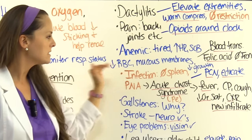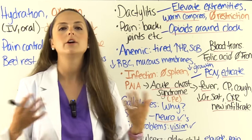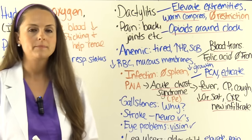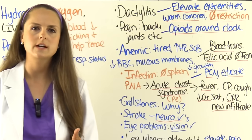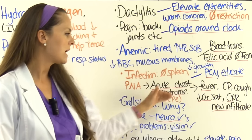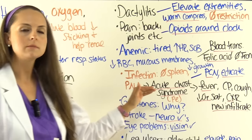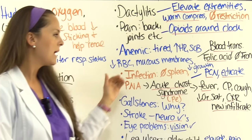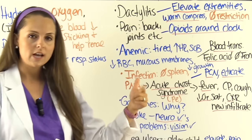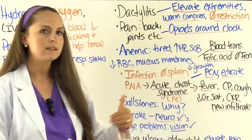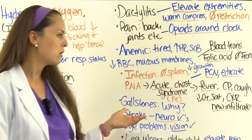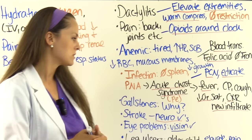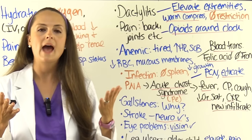The spleen isn't working well, so these patients are at huge risk for infection — it plays a role filtering out foreign invaders. Many can get pneumonia, so monitor respiratory status, breath sounds, oxygen saturation, and breathing. Many patients can enter acute chest syndrome, which can be preceded by pneumonia or a pulmonary embolism. People with sickle cell disease also have abnormal clotting, putting them at risk for throwing off clots. Signs include fever, chest pain, and low oxygen saturation; a chest X-ray typically shows a new infiltrate.